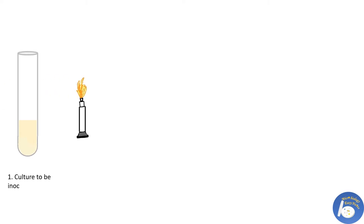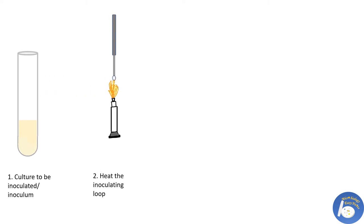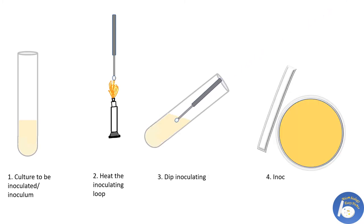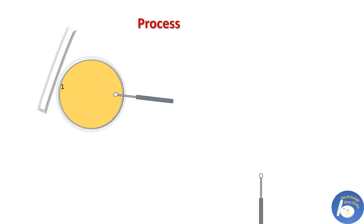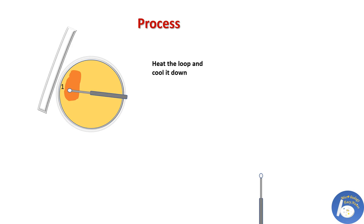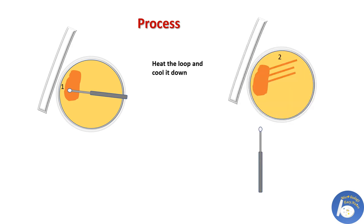Now we have a contamination-free Petri dish. Take the culture to be inoculated. Heat the inoculating loop in a Bunsen burner and cool it down for a few seconds. Dip it in the culture to be inoculated. Now the inoculating loop is ready to be streaked. Starting from the edge of the plate, lightly drag the loop and make a smear-like area. Be careful — do not cut the agar surface. Reheat the loop, cool it down for a few seconds, then drag the loop through the previously smeared area and streak two to three times, as shown in the picture.